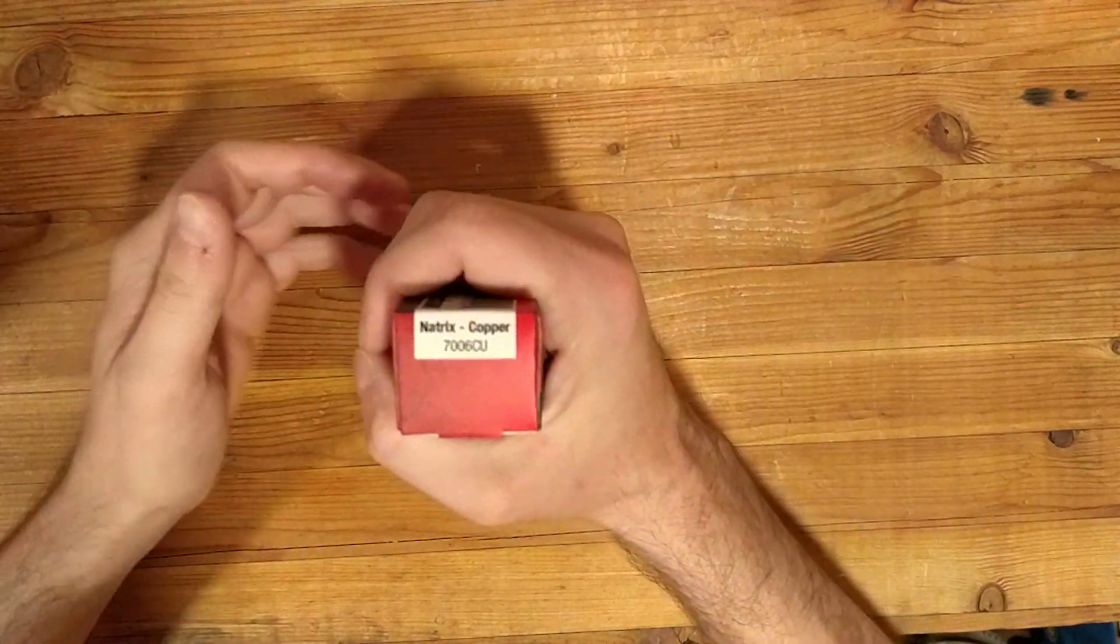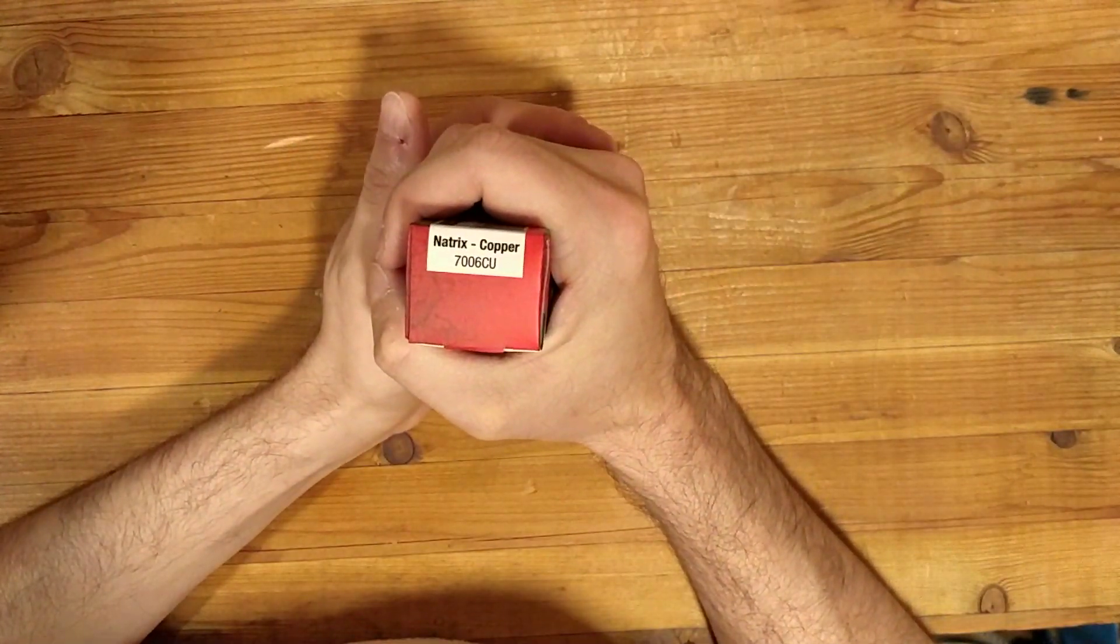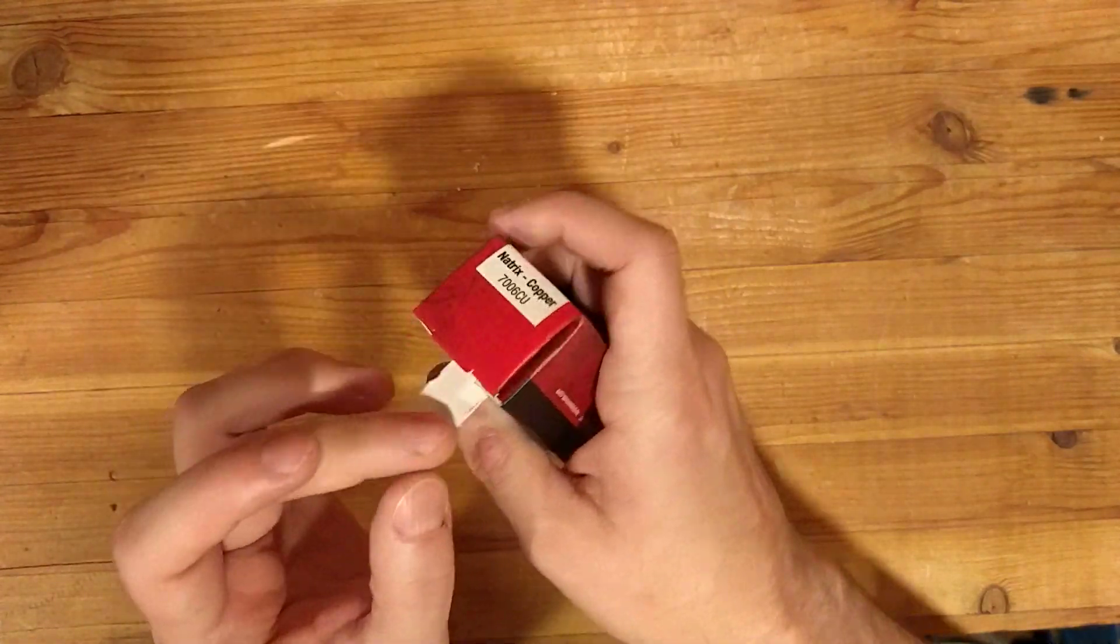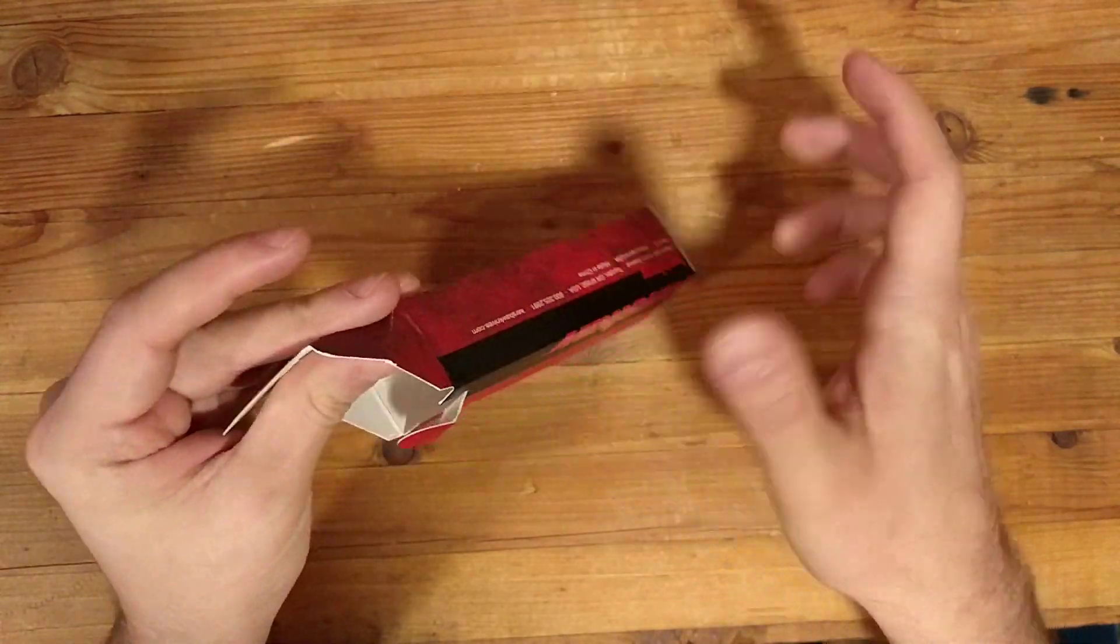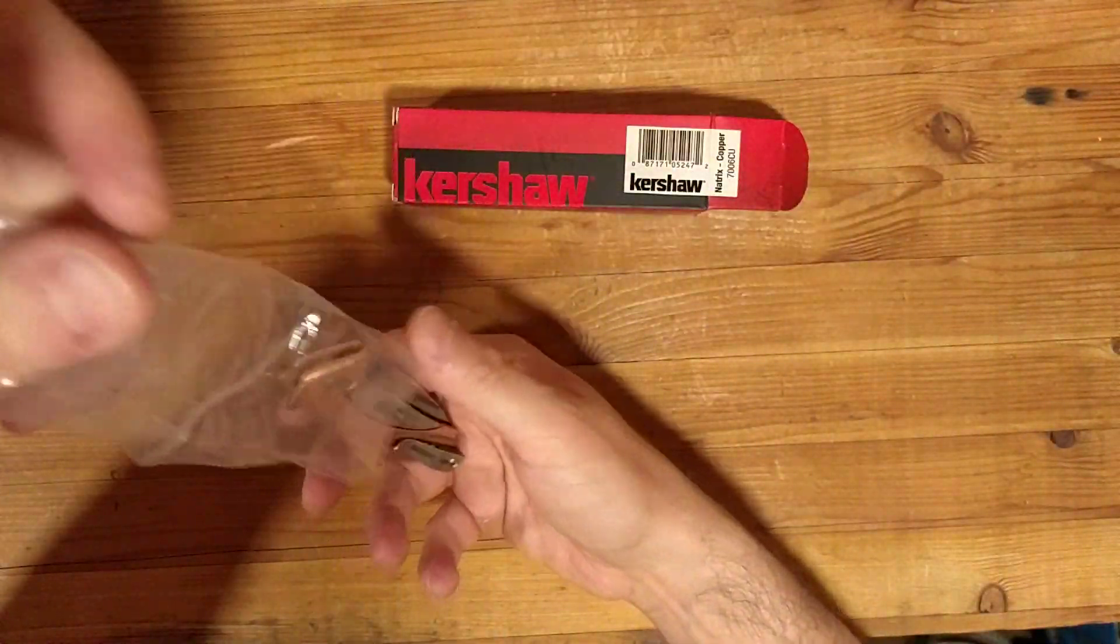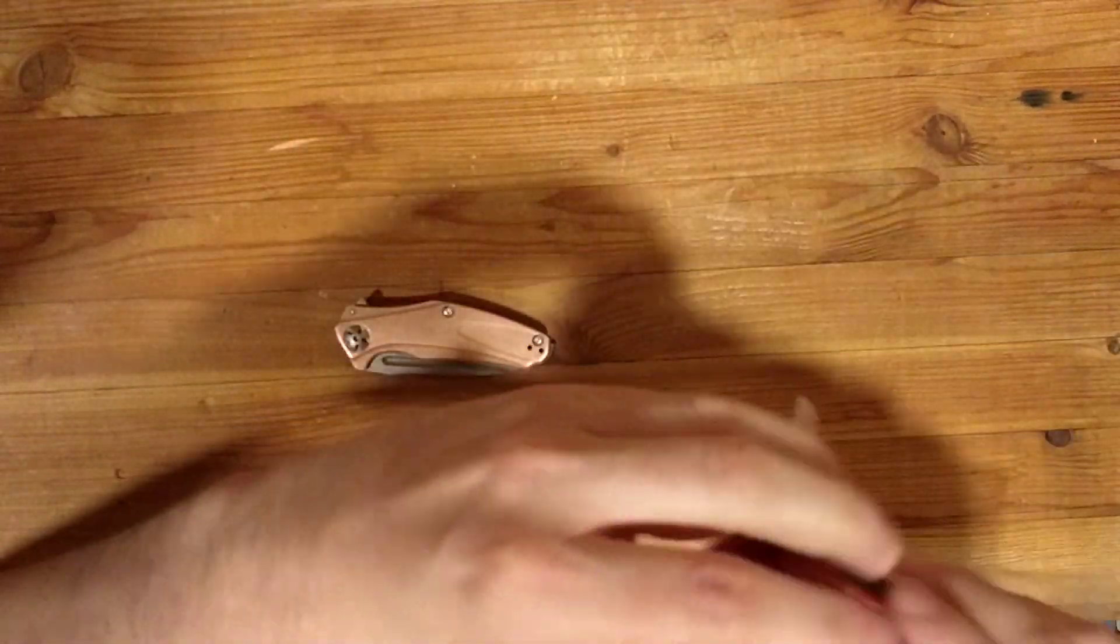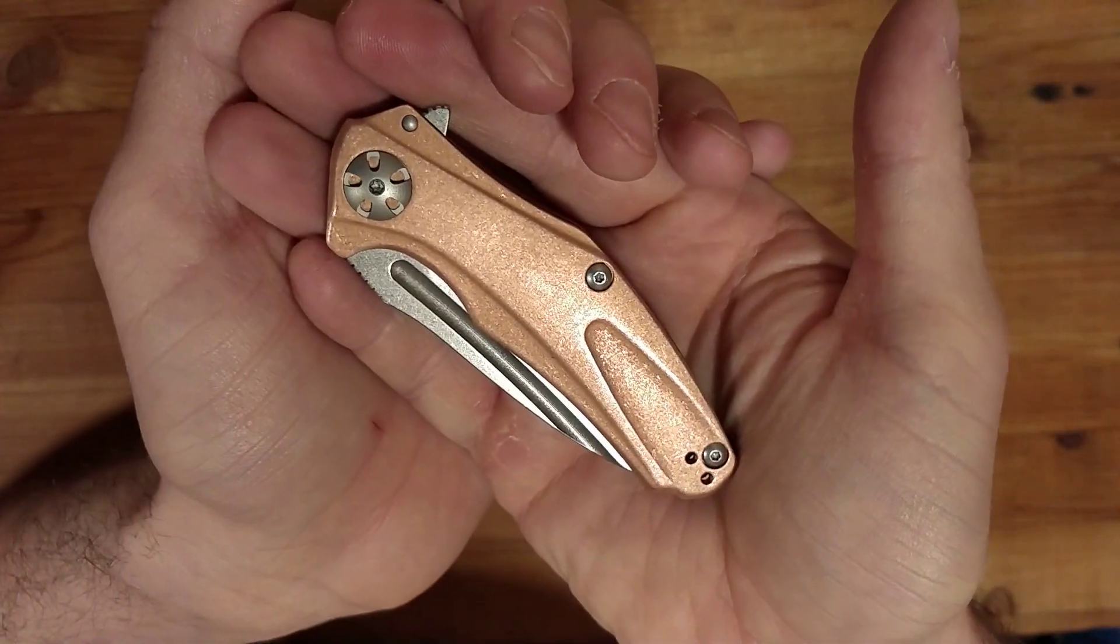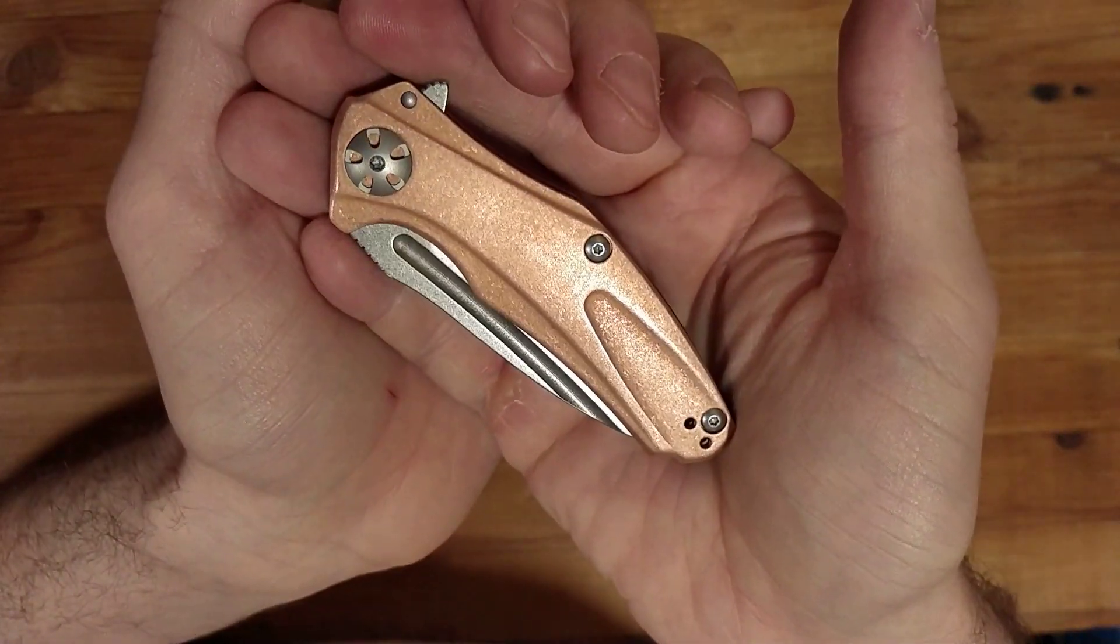Hello, this is day one of my 30-day review for the Kershaw Natrix in copper. The Kershaw Natrix is based on the ZT0770 which is based off the ZT0777. That means absolutely nothing to me as I am neither a Kershaw nor a ZT fan, but I picked this knife up because it is very pretty.